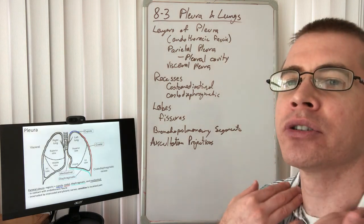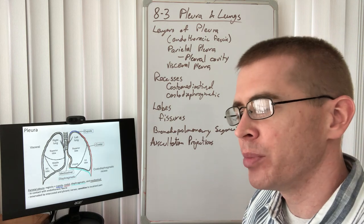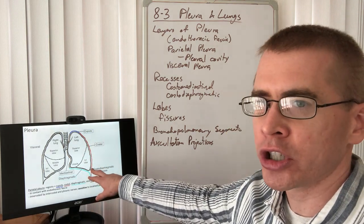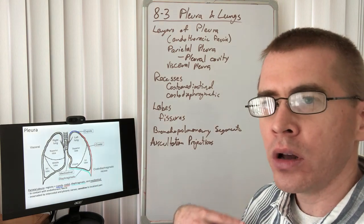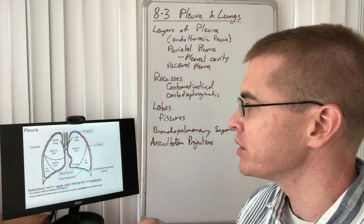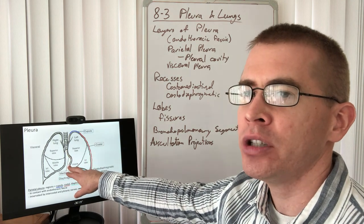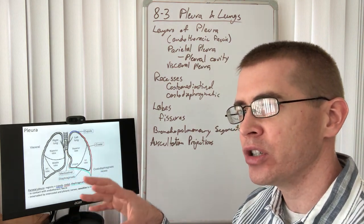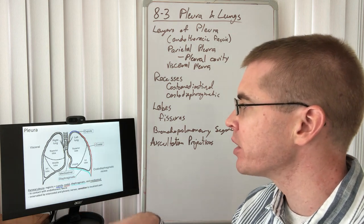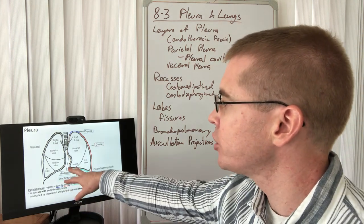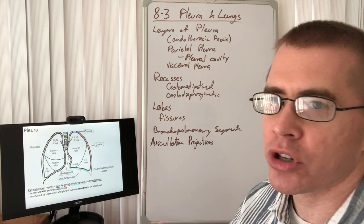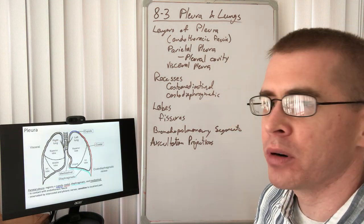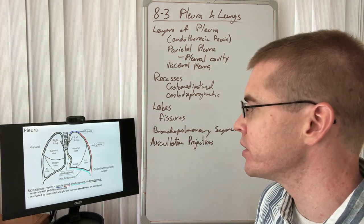It's the portion that covers the superior thoracic aperture. We have a costal portion, which is closest to the thoracic wall where the ribs are located. The mediastinal portion is the middle portion, closely associated with the mediastinum and the pericardium. We also have the diaphragmatic portion that rests on top of the diaphragm. That is all parietal pleura and its four different segments.